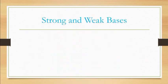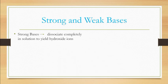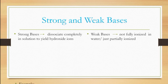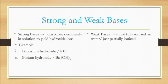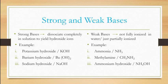Based on the capability of being ionized in water, bases are classified into strong bases and weak bases. Strong bases are bases that dissociate completely in solution to yield hydroxide ions — they are fully ionized. Weak bases are not fully ionized in water — only partially ionized. Examples of strong bases are potassium hydroxide, barium hydroxide, and sodium hydroxide. Examples of weak bases are ammonia, methylamine, and ammonium hydroxide.